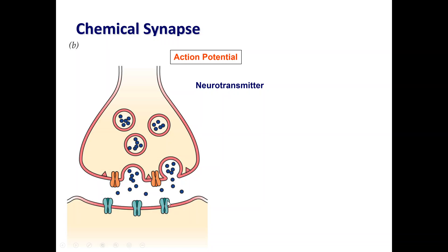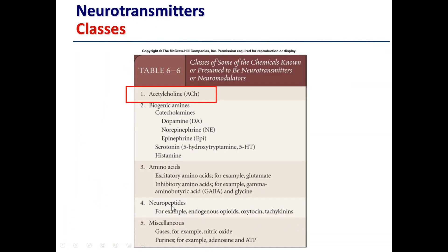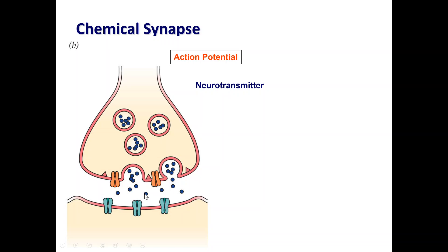The only neurotransmitter to be aware of in this module is acetylcholine, because this is the neurotransmitter specific to the receptors on the muscle cell. What it does is open sodium channels — sodium is concentrated outside the cell, so it moves into the cell causing depolarization of the muscle cell. We get an action potential within the muscle cell and that initiates a series of events which result in contraction.